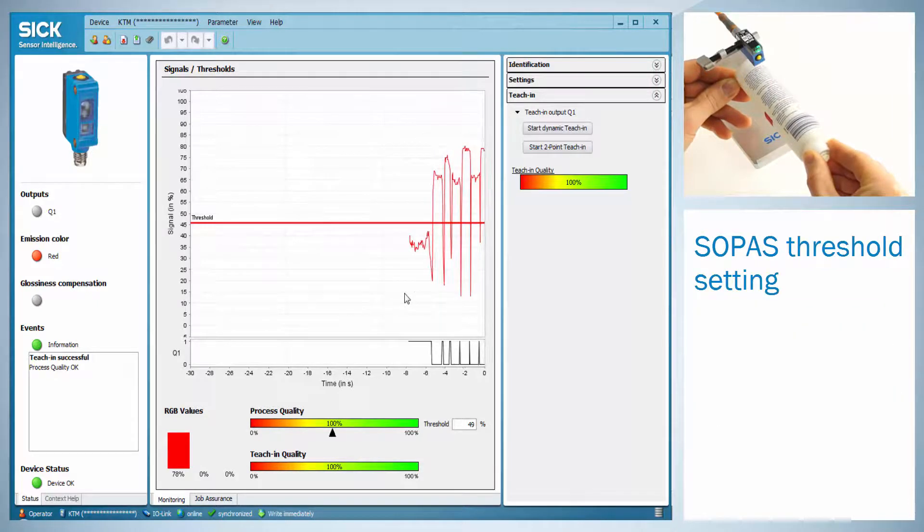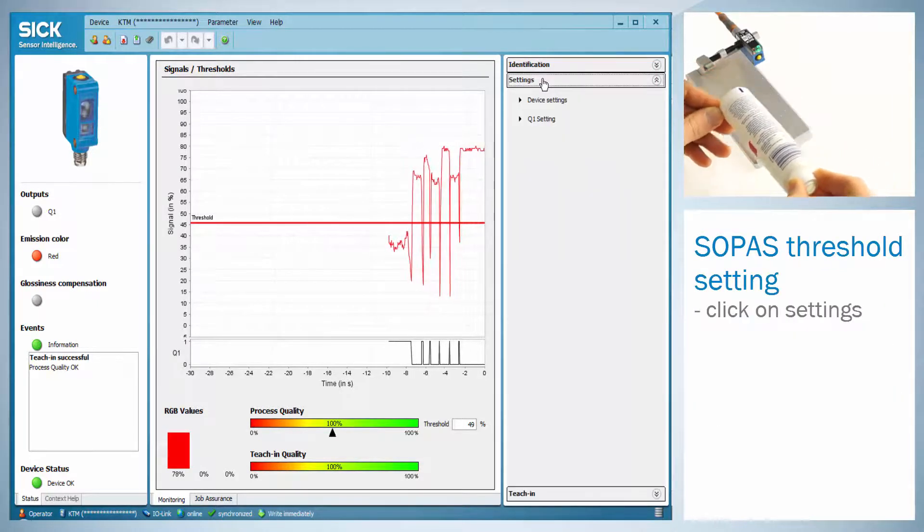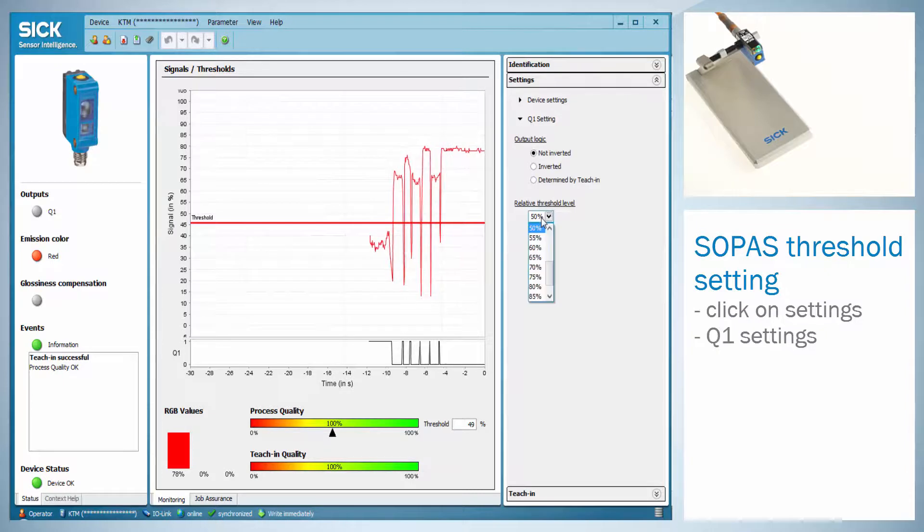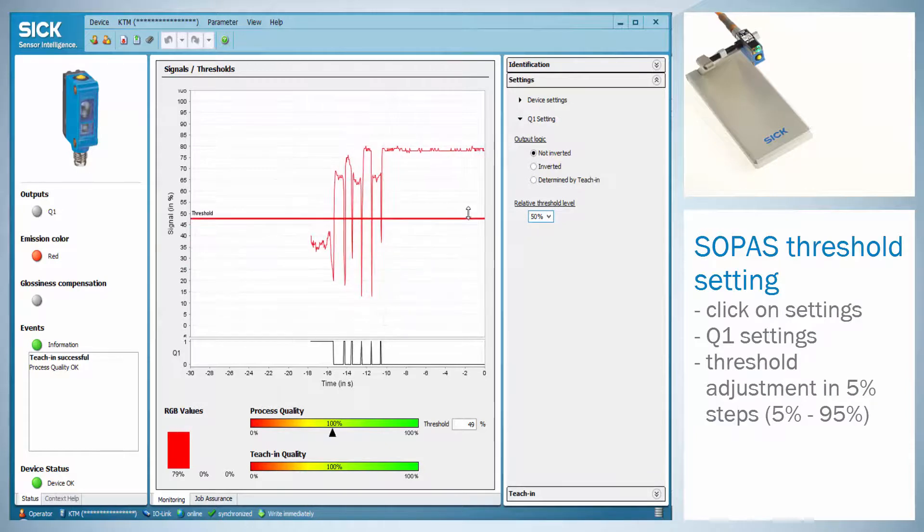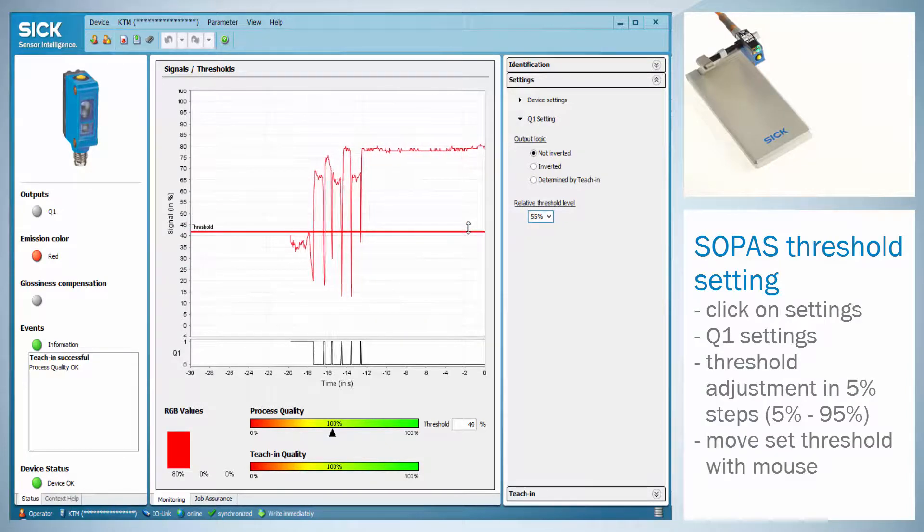The threshold of the switching output can be adjusted by clicking on the settings flag and then on Q1 settings. The threshold can be adjusted in 5% steps between 5 and 95%. Another way is moving the threshold level with a mouse on the central screen.